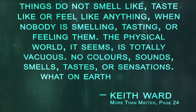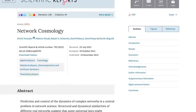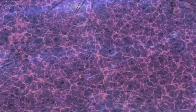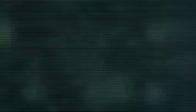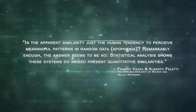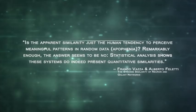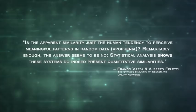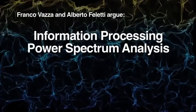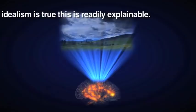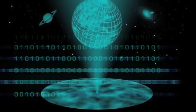This correlates to what a few scientists have recently published where they point out that there are interesting similarities between neural networks and the cosmic web of galaxies. Recently, astrophysicist Franco Vazza and neurosurgeon Alberto Folletti wrote an article on the similarities between both. Is the apparent similarity just the human tendency to perceive meaningful patterns in random data? Remarkably enough, the answer seems to be no. Statistical analysis shows these systems do indeed present quantitative similarities. They note the similarities line up with information processing, power spectrum analysis, total neuron to total observable galaxies, and in many other ways. If idealism is true, then this is readily explainable and fits with the rest of the data we have presented. Both form the same physical structure because both are emerging from an underlying mental reality.